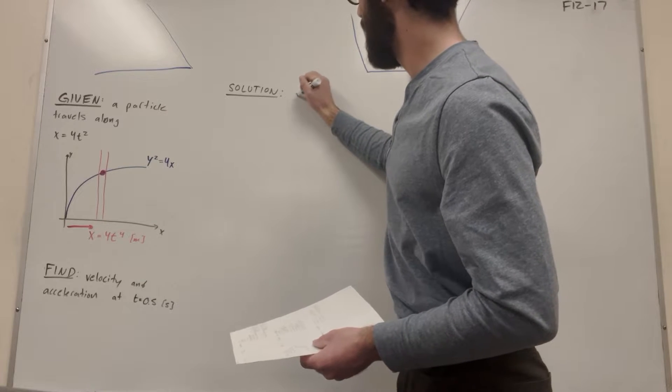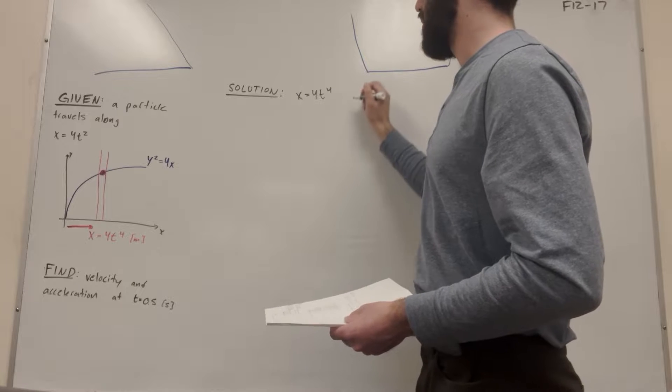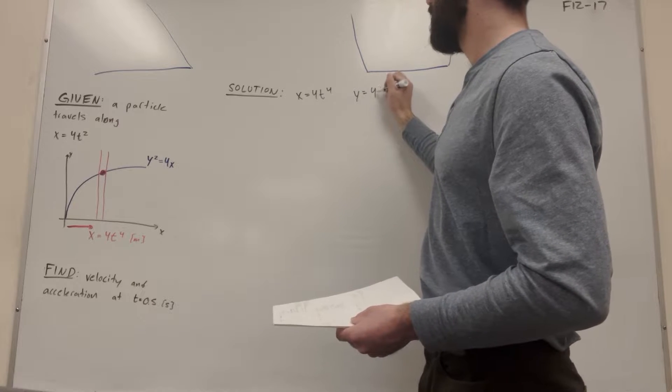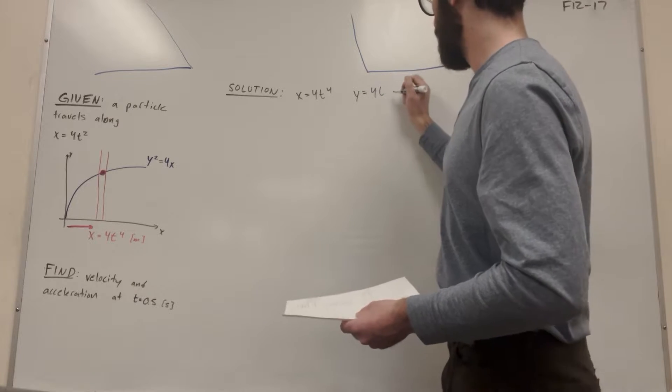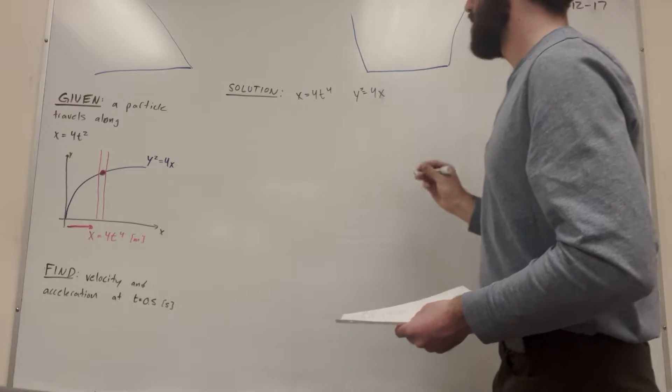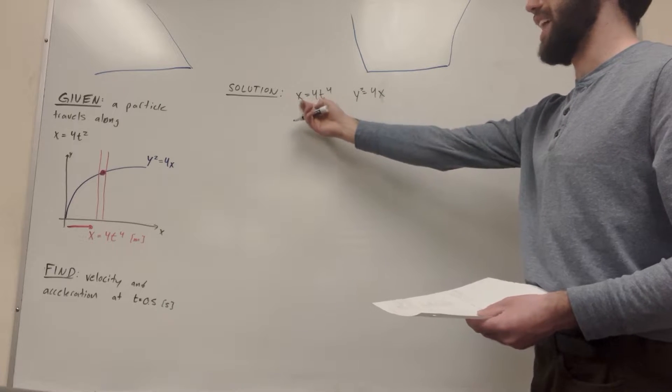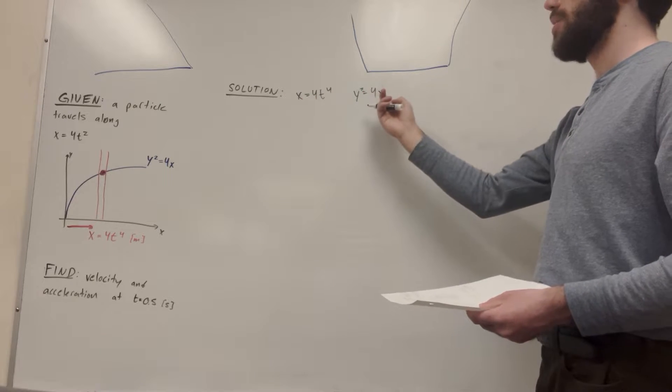So let's get started with that. Let's write out what we know. We know that x equals 4t to the 4th. And we know that y squared equals 4x, not t. So our goal is to get y in terms of t. So let's go ahead and plug in x equals 4t to the 4th where this x is here.